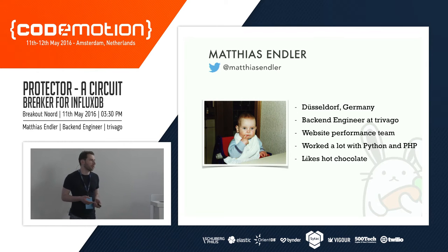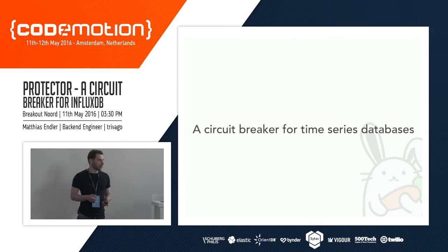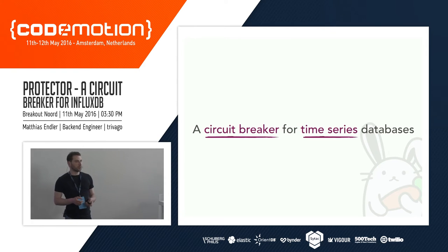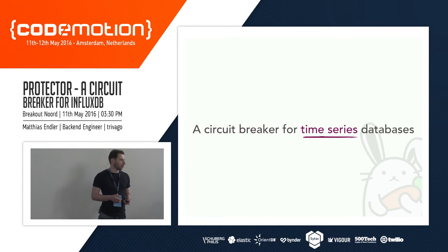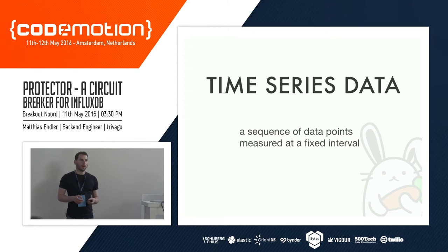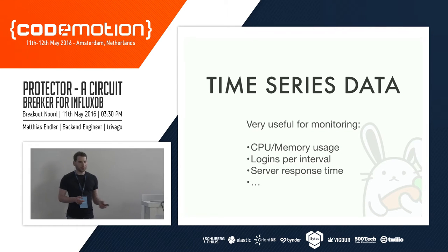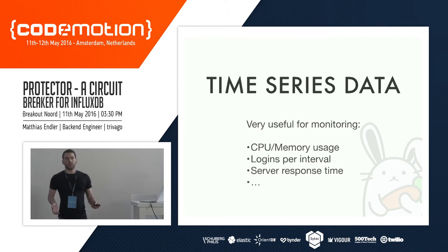I want to explain what a circuit breaker is and what a time series database is. A time series database is just a sequence of data points measured on a fixed interval. It could be, for example, CPU usage, memory usage, logins per interval on your main website, or the server response time — everything that you can express as a number and measure on a regular basis, like every 10 seconds or so.